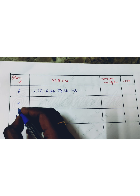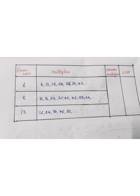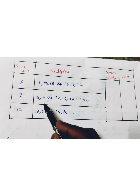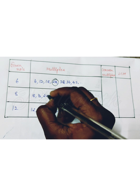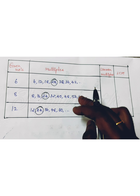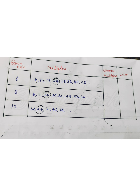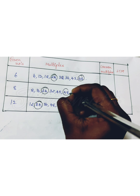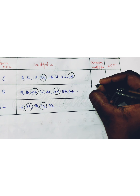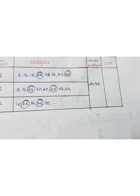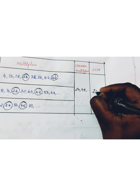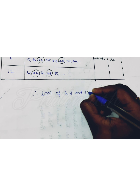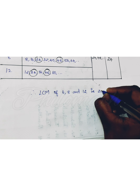Similarly, we write the multiples of 8: 8, 16, 24, 32, 40, 48, and so on. And the multiples of 12: 12, 24, 36, 48, and so on. Now we find the common multiples: 6 is not in 8's list, 12 is in 12's list but not 8's, but 24 is in the multiples of 6, 8, and 12. Similarly 48 is also common. So the common multiples are 24, 48, and so on. The least one is 24. Therefore, the LCM of 6, 8, and 12 is 24.